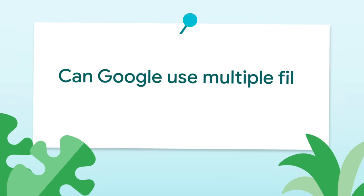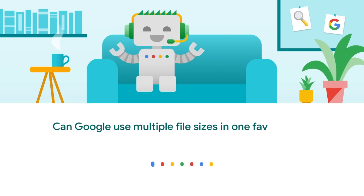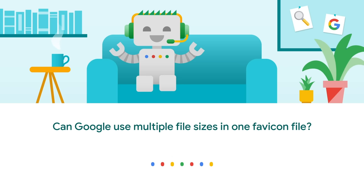Dave asks: can Google use multiple file sizes from one favicon file? Does it understand multiple icons marked up with the size attributes and pick an appropriate one? Hi Dave. Technically, the .ico file format allows you to provide files in multiple resolutions. However, with the rise of the number of sizes used for various purposes, I suspect it's generally better to specify the sizes and files individually. Google does support multiple favicon sizes in HTML, so if there are specific sizes you want to provide, I'd go with that.